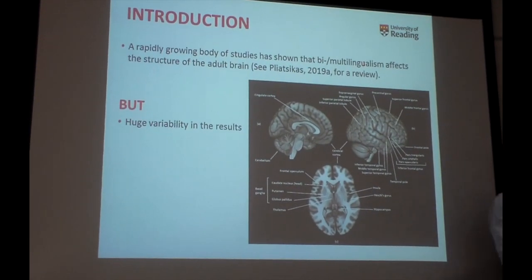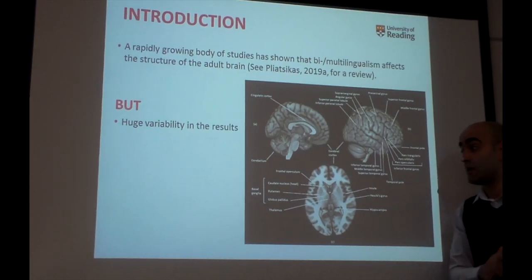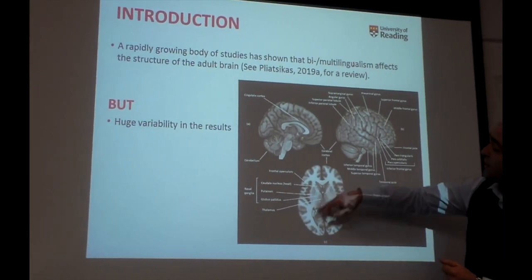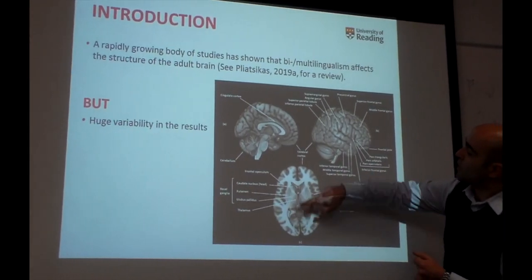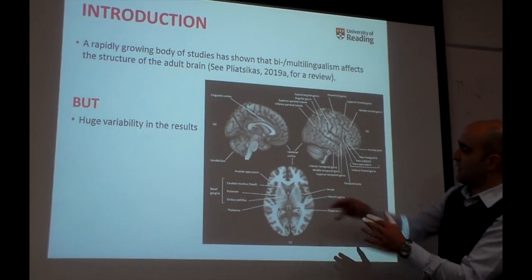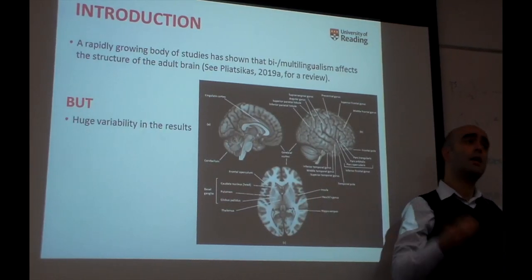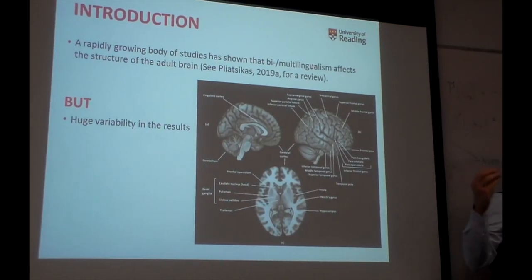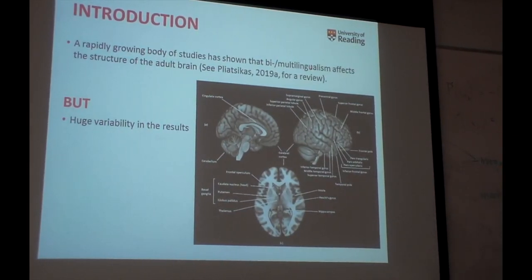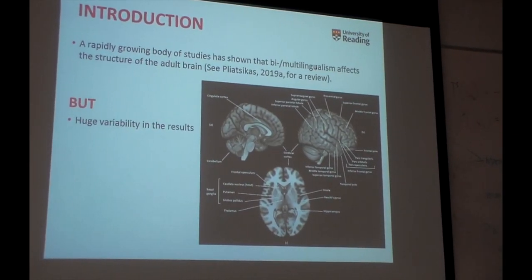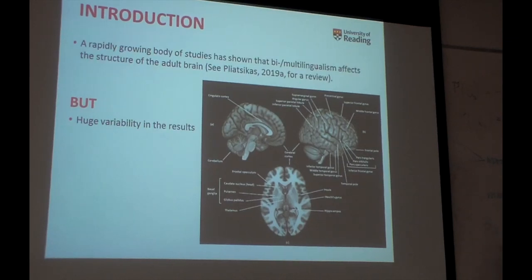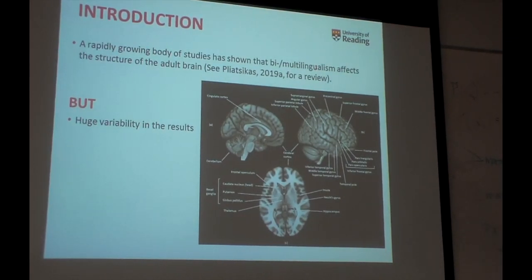And there's another set of results that talks about changes in the white matter, which is right inside the brain. These are the axons of the neurons which provide connectivity between brain regions. So that was the crash course on brain anatomy.